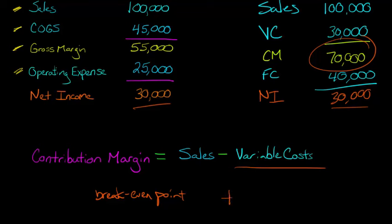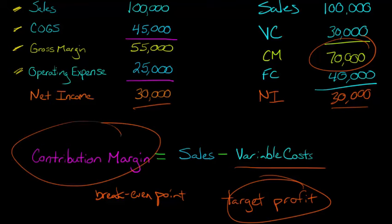And then we could even go further and say, okay, well, let's say we wanted to have a target profit of a certain amount. Let's say we wanted to have a profit, a net income of $70,000 or $80,000. To get that target profit of $80,000, what would our sales need to be? And we need to know our contribution margin in order to figure these things out.